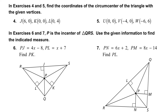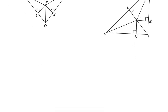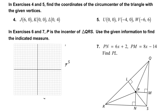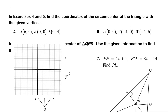This one starts with number four. In exercises four and five, find the coordinates of the circumcenter of the triangle with the given vertices. The first one has vertices at (6, 0), (0, 0), and (0, 4). I'm going to show you how to do these graphically. I've put in a grid, and let's plot the points — (6, 0), (0, 0), and (0, 4).